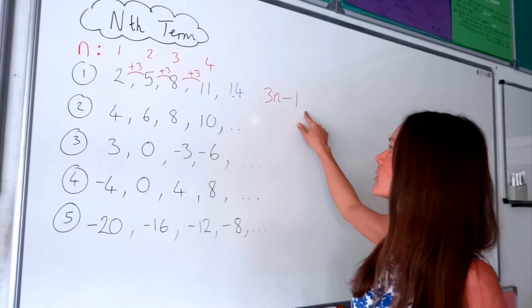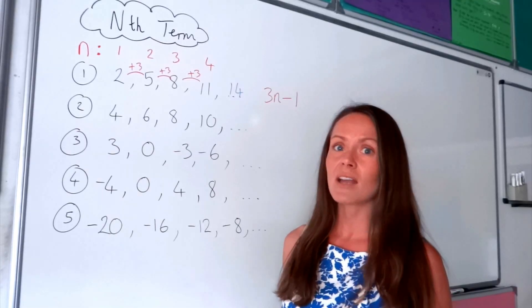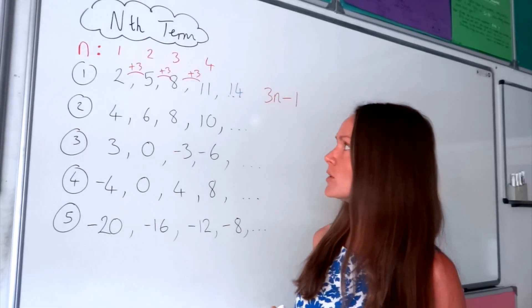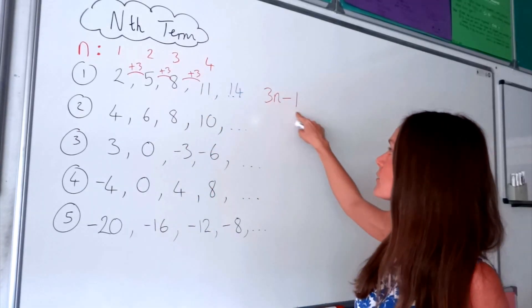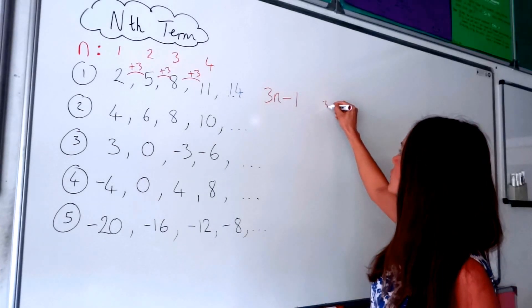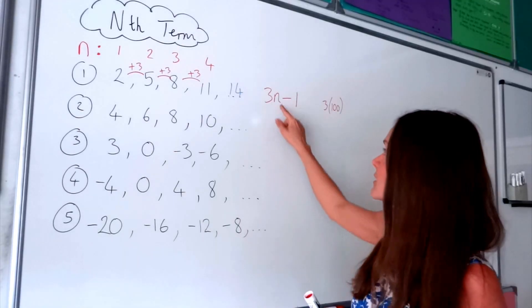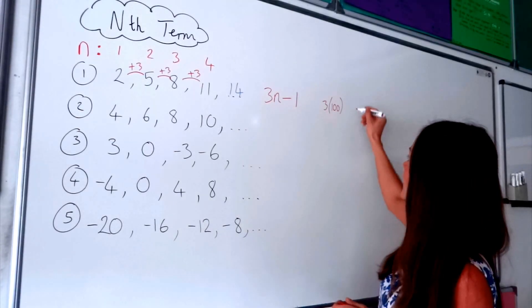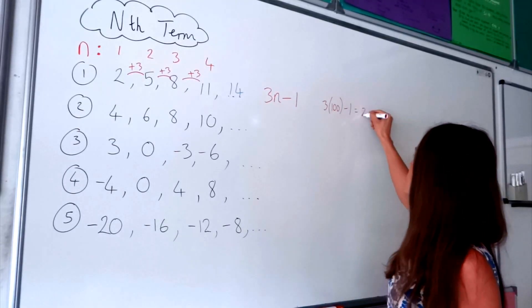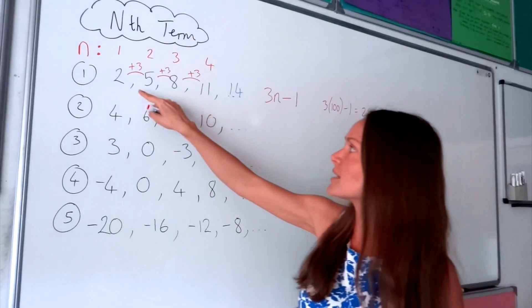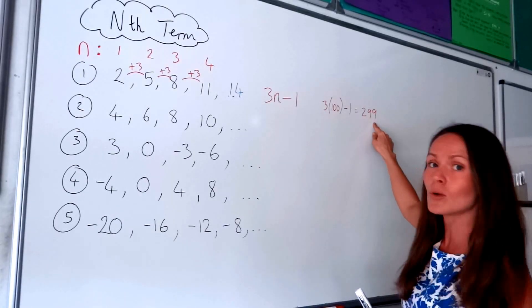So I can use this formula to find any number in that sequence. If I wanted to find the 100th number, I don't need to write out all numbers up to the 100th term — I can use this formula. I change n to 100: 3 times 100 is 300, and 300 minus 1 is 299. So the 100th number in that sequence would be 299.